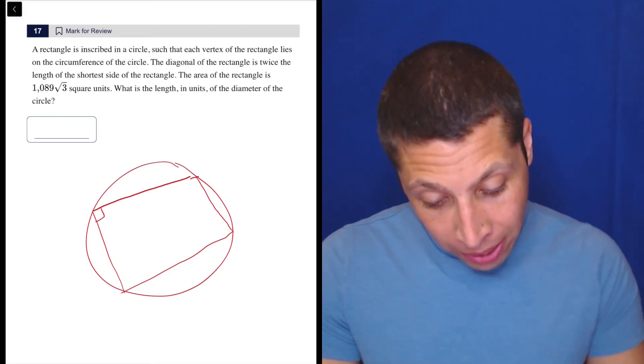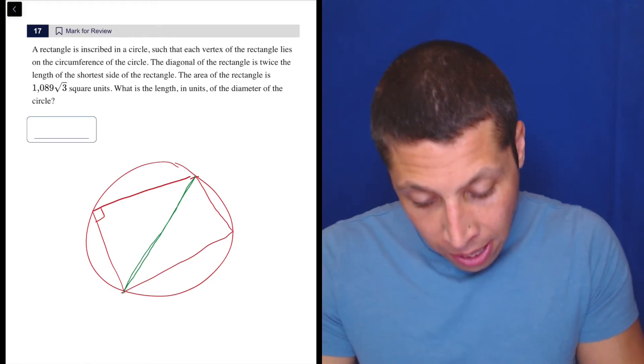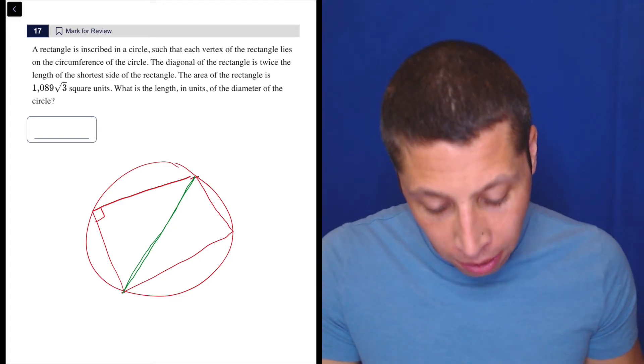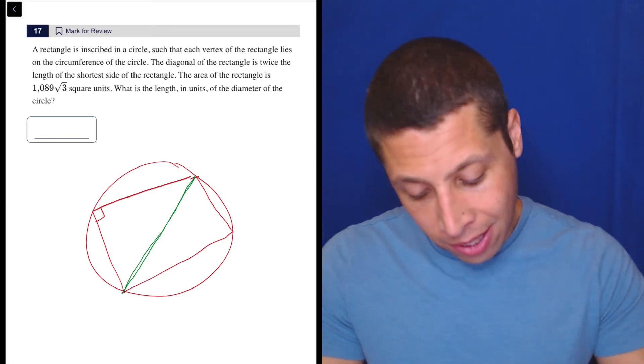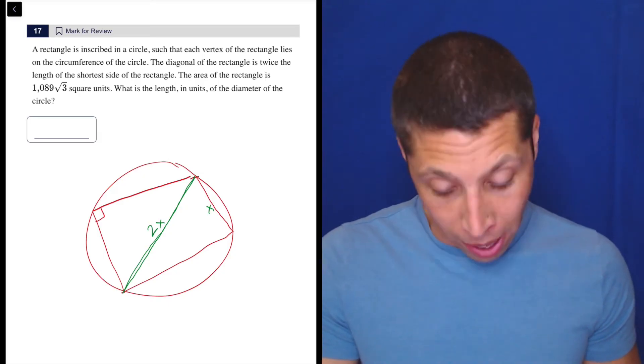The diagonal of the rectangle, so let's do another color here. The diagonal of the rectangle, so that's this, and that's gonna go through the center, is twice the length of the shortest side of the rectangle. So if you have trouble understanding what that means, we're gonna have to use x's, right? So we're gonna say that this is twice the length of the shortest side, so x and 2x.